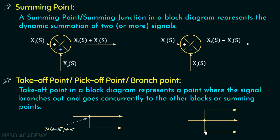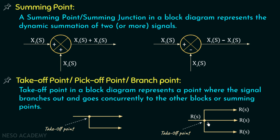Similarly, in this block diagram, this is the takeoff point as it distributes the signal into three branches. If this signal is R(S), then we can distribute this signal with the help of this takeoff point among these three branches. So this is the basic use of a takeoff point in a block diagram — it distributes the signal from one branch into several other branches.